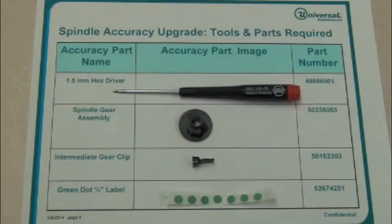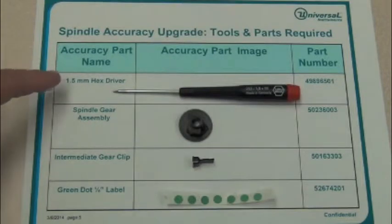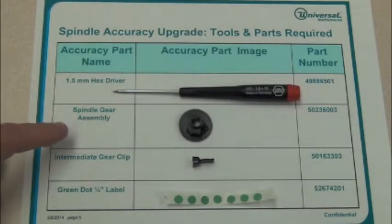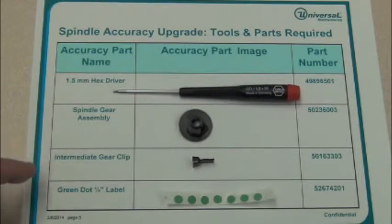These are the spindle accuracy upgrade tools and parts required: 1.5mm hex driver, the new spindle gear assembly, intermediate gear clip, and a green dot to label the spindle once it's been upgraded.